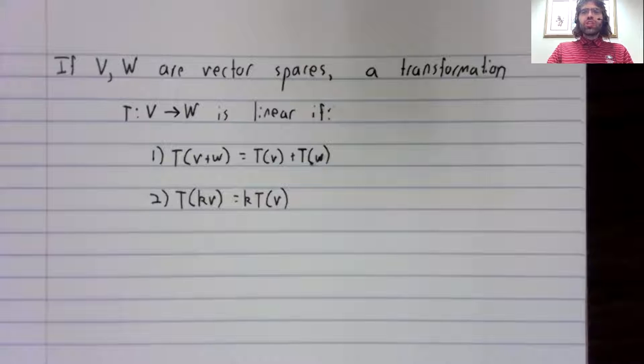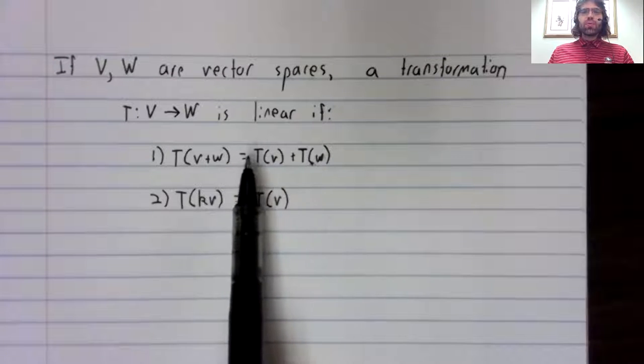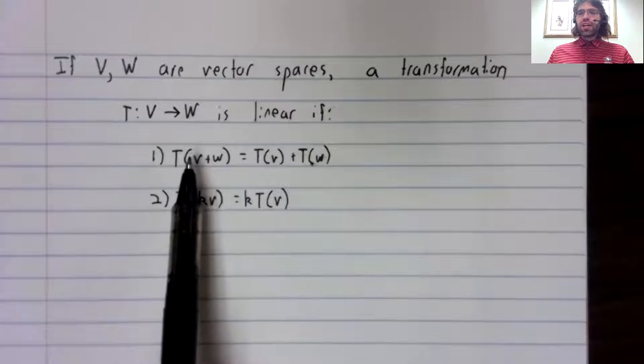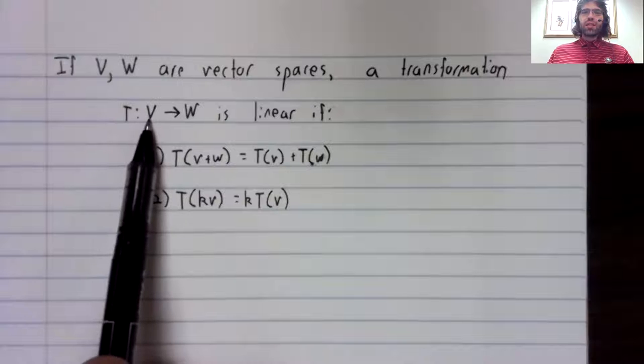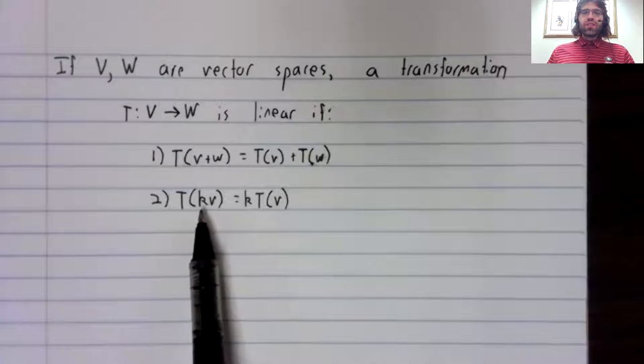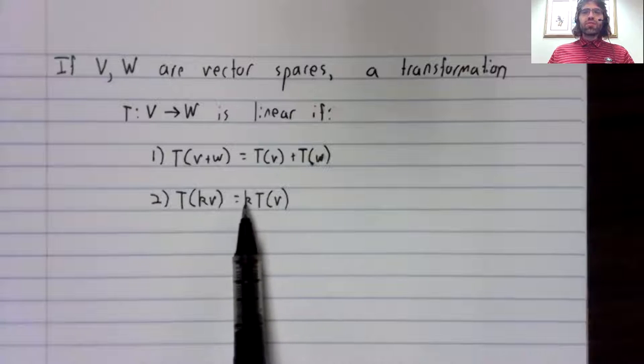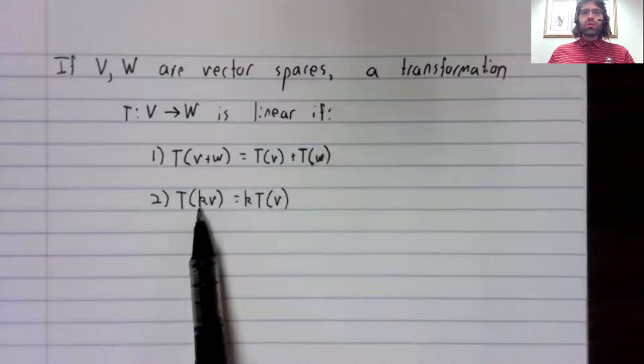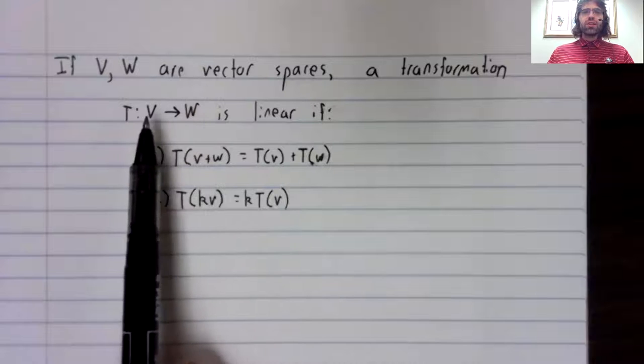The definition is identical, though. T of a sum, V plus W, has to equal T of V plus T of W for any two vectors V and W in the domain. And T of a scalar times V has to equal the scalar times T of V for any scalar K and any vector V in the domain.